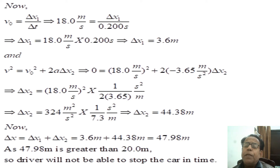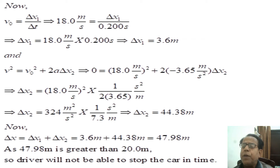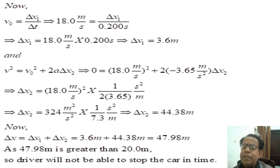Now, v₀ = Δx₁ / Δt. This implies that 18.0 m/s = Δx₁ / 0.200 s. Putting in the values, this implies that Δx₁ = 18.0 × 0.200 = 3.6 meters.